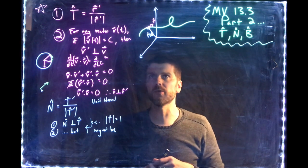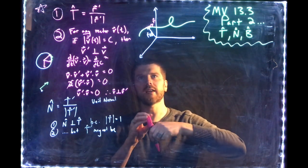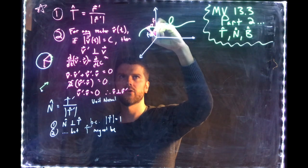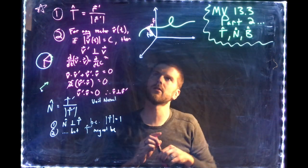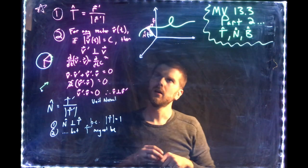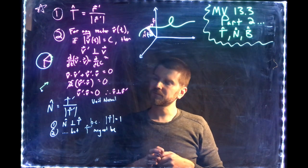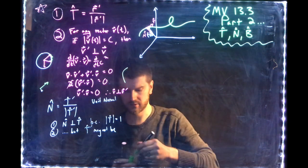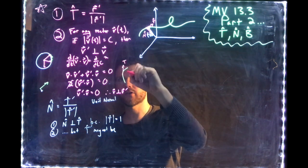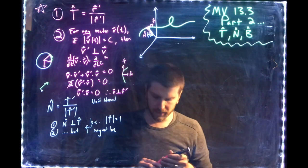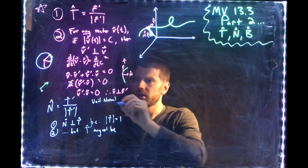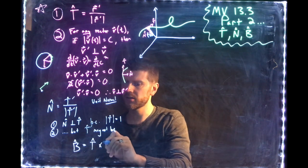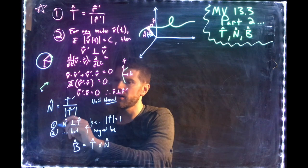If you're wondering what good this is, the unit normal vector is always going to be at right angles to the curve. It will always point towards the inside of a curve — t-hat points along the curve, and n-hat always points towards the inside. We can define one last vector called the unit binormal vector, b-hat. This is just the cross product of t-hat and n-hat: b-hat equals t-hat cross n-hat.